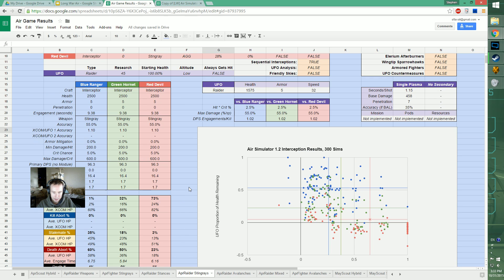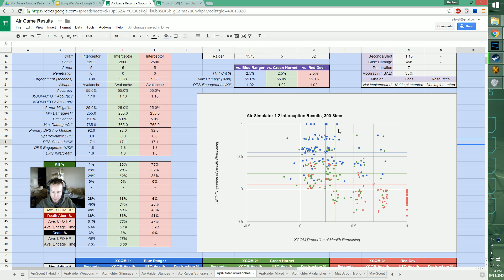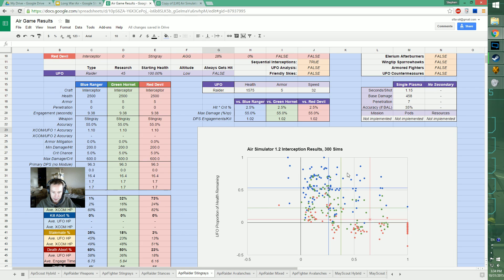Stingrays on the other hand are much more consistent. With three intercepts we almost always more than half killed the UFO. Overall we end up with basically the same result - 73% kill rate with three interceptors. The difference is minimizing red dots in the stratosphere, and Stingrays have far fewer times where a UFO won't go down to the fourth intercept reliably.